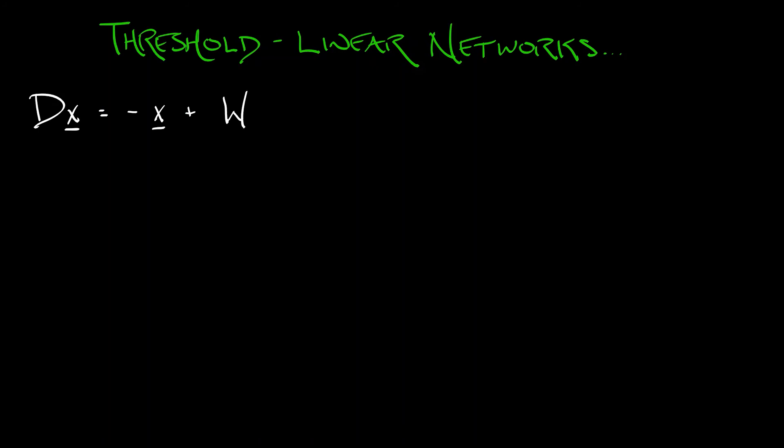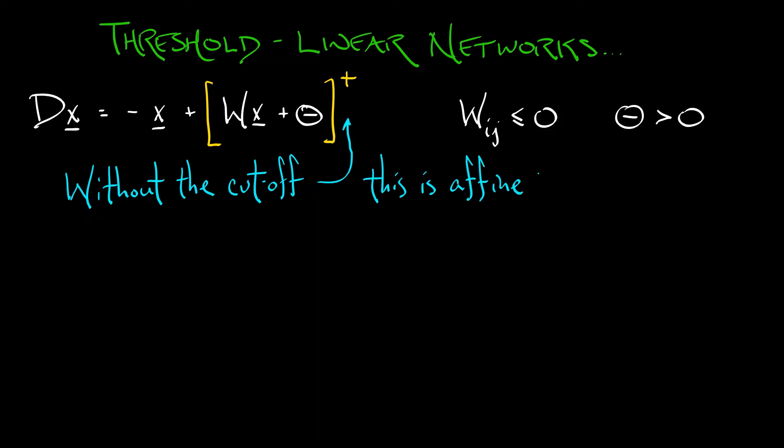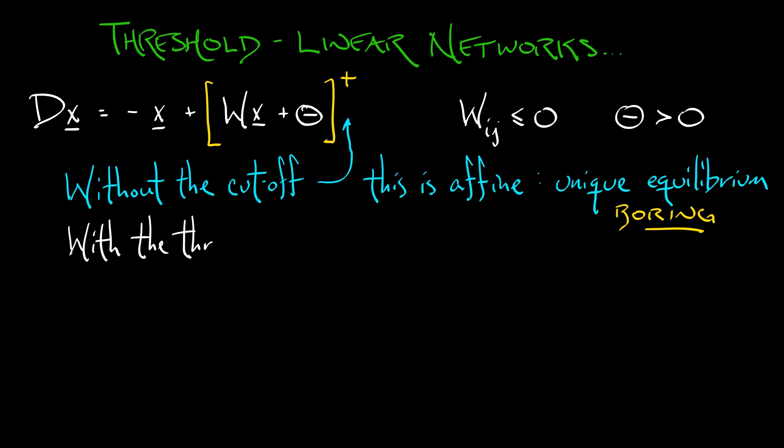So that's the threshold linear network model. Again, those W terms, the interaction terms, they are non-positive. They're pulling things down. The theta, that activation, is positive. It's pulling things up and we threshold things because without that thresholding, this is an affine system, unique equilibrium, stable, and boring. But with that thresholding, it acts kind of like a non-linearity, and you get some interesting things depending on W.